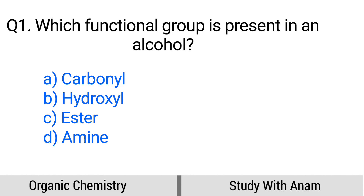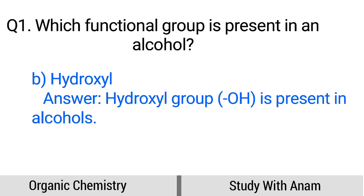Question number 1. Which functional group is present in an alcohol? Option A: Carbonyl, B: Hydroxyl, C: Ester, D: Amine. The correct option is option B, Hydroxyl. The hydroxyl group (-OH) is present in alcohols.